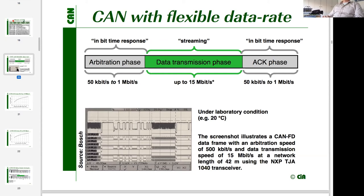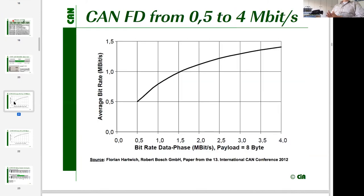When Bosch engineers evaluated this, they said: let's start in a classical way, keep all CAN attributes during the arbitration phase, and then as soon as it is clear who is the sender, jump to an accelerated bitrate to transfer the major part of the CAN frame — the data field — at higher bitrate, then at the end switch back to the acknowledge phase at the original communication speed.